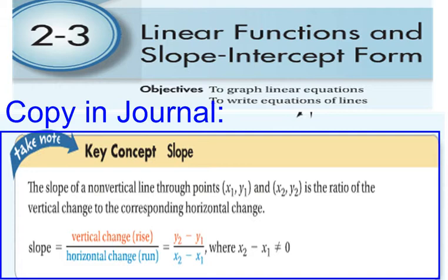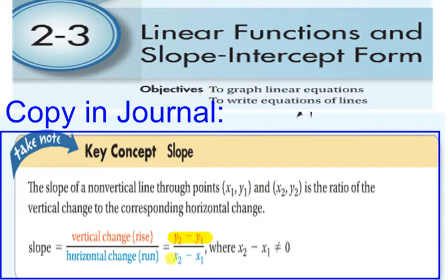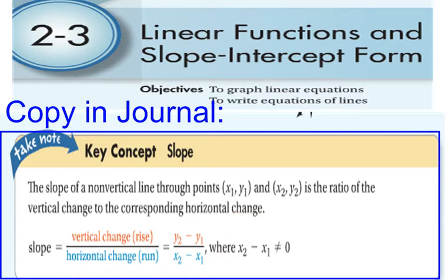We started off with bell work of 2-3 with linear functions and slope intercept form. I had the students copy in their journal the key concept of the slope, that the slope of a non-vertical line through points x1, y1, and x2, y2 is the ratio of the vertical change to the corresponding horizontal change. So then you had the formula of slope equal the vertical change, which is your rise, over your horizontal change, which is the run. That comes down to y2 minus y1 over your horizontal change, x2 minus x1. And they denote here that x2 minus x1 can never equal zero. That's because you can't have zero in a denominator of a fraction. That makes an undefined number.